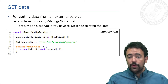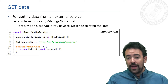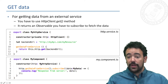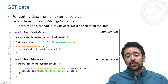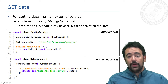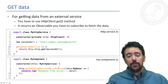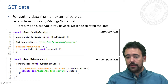In the component where we need to get this data, we inject the service we have created to encapsulate this functionality, and then we subscribe to the method we have created, because this method returns an observable. So when we call getDataFromService(), what we actually get is an observable and we have to subscribe to it to get the corresponding retrieved data.